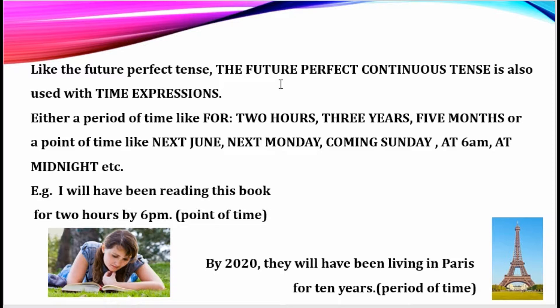You can use either of the time expressions — a period of time or a point of time. For example: 'I will have been reading this book for 2 hours by 6pm.' I started the action at a certain past time and it will be continuing at a certain future time as well. By 6pm, I will have read it for 2 hours — 'I will have been reading this book for 2 hours by 6pm.'